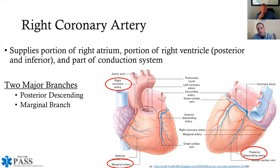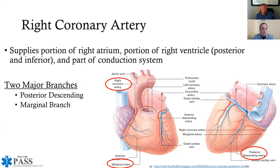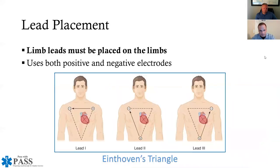Coronary artery anatomy is important not only for 12-lead interpretation but also for exam questions. On the national registry, you may be given a 12-lead EKG and asked which coronary artery is most likely affected to produce that type of MI. You're expected to know which portion of the heart correlates with each coronary artery.